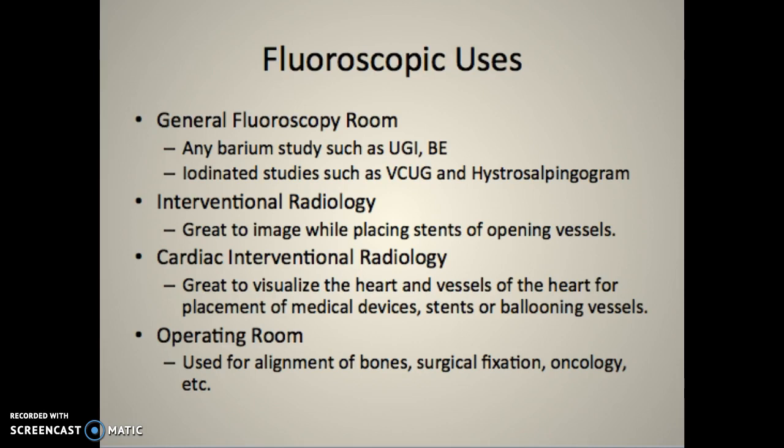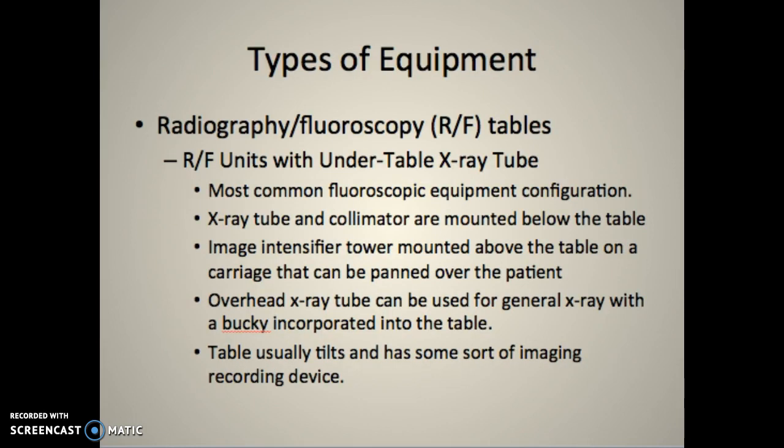The operating room is great for any kind of C-arm work - sometimes they have fixed units, but typically we bring in a C-arm unit for ortho work, oncology, etc. R&F tables - radiographic fluoroscopy - are where you have an X-ray tube and a fluoro together. R&F units with under-the-table X-ray are the most common. The tube and collimator are mounted below the table, which provides safety - the metal table absorbs the X-rays and helps provide a natural shield.